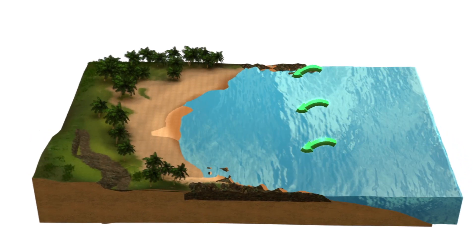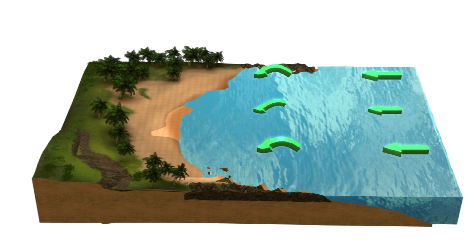Rip currents are common on coastlines with breaking waves. When inbound waves break more strongly in some locations, circulation cells form, causing outbound rip currents to travel in narrow, fast-moving belts.